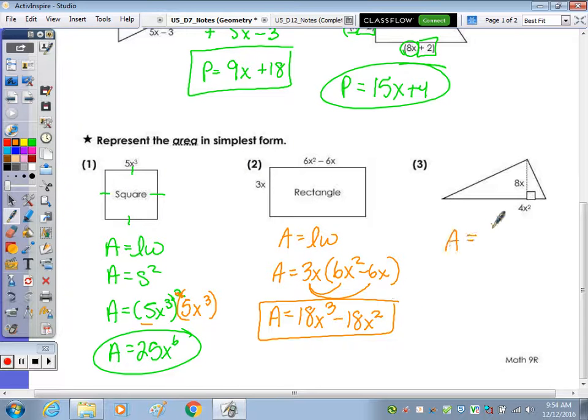For the triangle, the formula for area is one half base times height. Our total base is 4x squared and our height is 8x. So area is one half of 4x squared times 8x. One half of 4 is 2, and 2 times 8 is 16. x squared times x is x cubed. The area is 16x cubed.